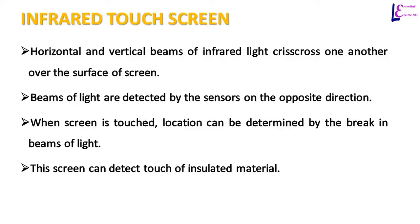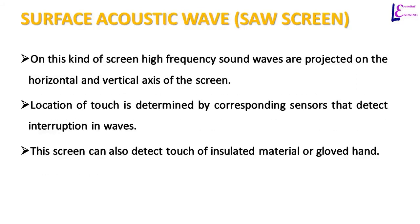In surface acoustic wave touch screens, high frequency sound waves are projected on the horizontal and vertical axis of the screen. The location of touch is determined by corresponding sensors that detect interruption in the waves. This screen can also detect touch of insulated material or a gloved hand.